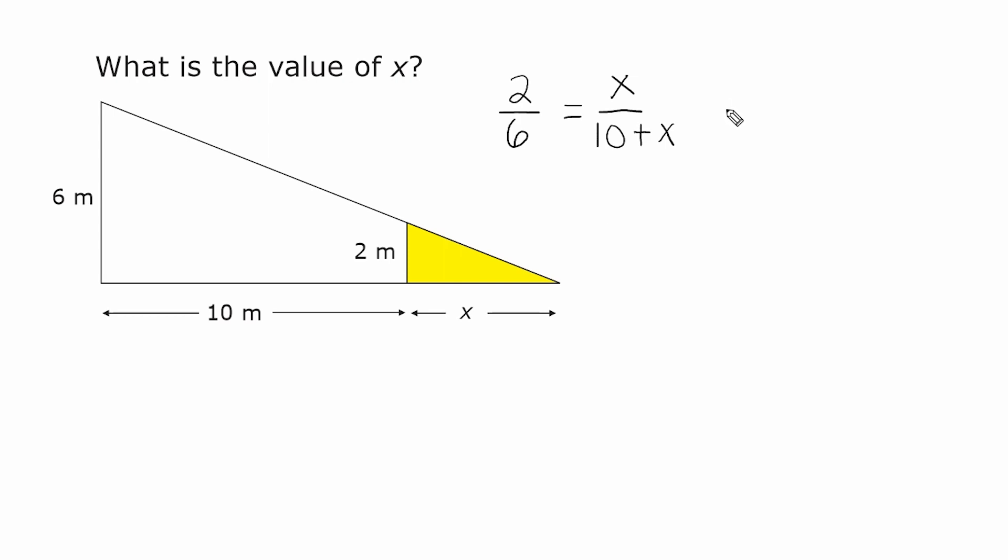Now, what we should remember with any proportion is that when we cross multiply, we are going to get equivalent products. In other words, 6 times x is going to be equal to 2 times the sum of 10 plus x. So let's go ahead and express that algebraically. So 6 times x is written as 6x and we set that equal to 2 multiplied by the sum of 10 plus x.